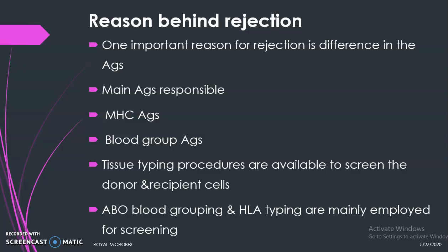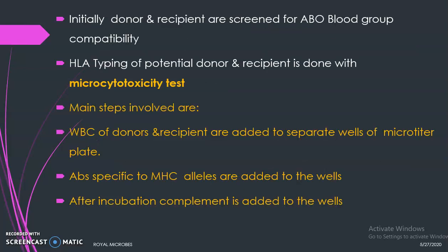One important reason for rejection is the difference in antigens. The main antigens responsible are MHC antigens and blood group antigens. Tissue typing procedures are available to screen the donor and recipient cells to avoid graft rejection. The main screening procedures available are ABO blood grouping and HLA typing.